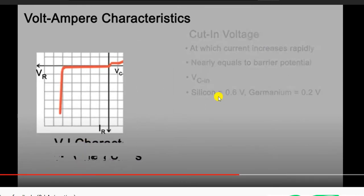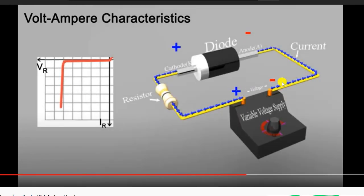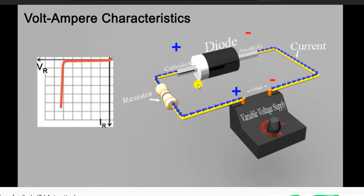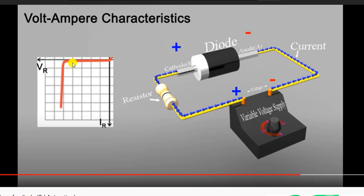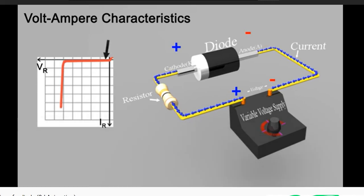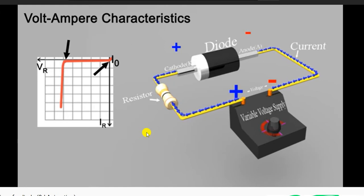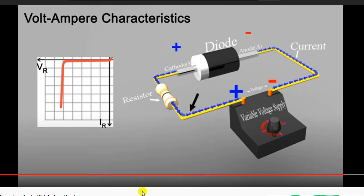Silicon has a barrier potential of 0.6 V and germanium has 0.3 V. In the reverse bias characteristic, the negative terminal is connected to the positive terminal of the diode. As the reverse voltage increases, the barrier potential increases and a small minority carrier current flows. Due to electron dislocation, the current eventually increases sharply. The diode operates in the third quadrant for reverse bias characteristic.